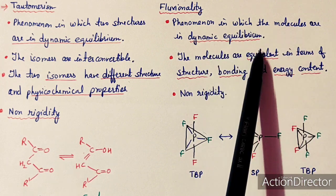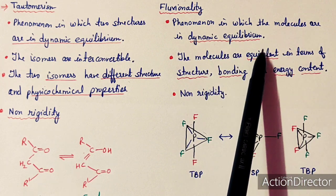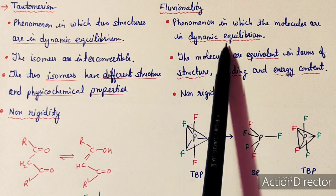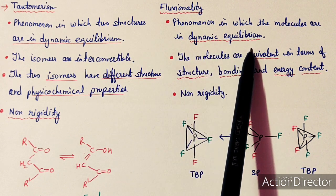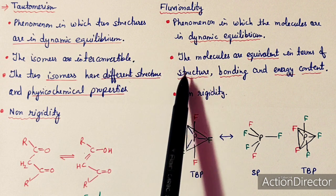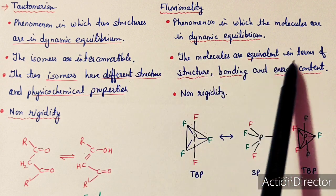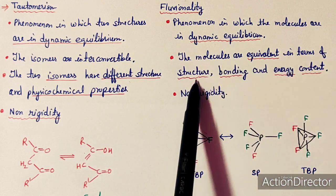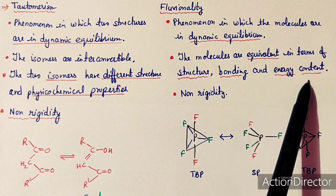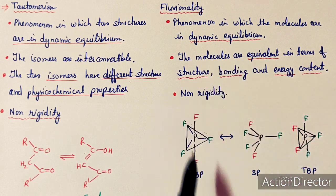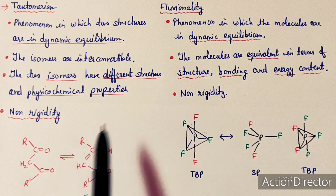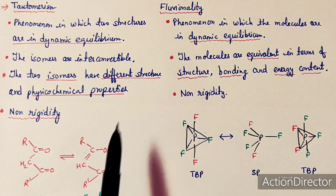Fluxionality is the phenomenon in which molecules are in dynamic equilibrium, but the difference is that the molecules are equivalent in terms of structure, bonding, and energy content. These are also called non-rigid molecules.